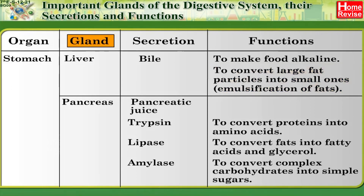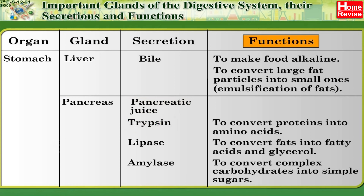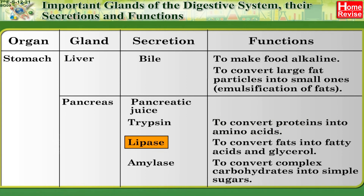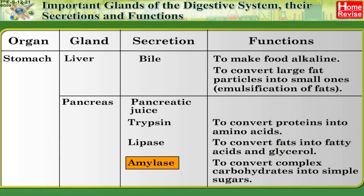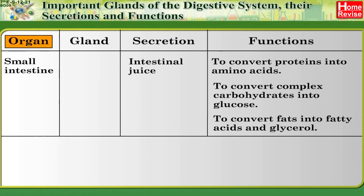Pancreas: secretion — pancreatic juice; enzymes include trypsin — function: to convert proteins into amino acids; lipase — function: to convert fats into fatty acids and glycerol; amylase — function: to convert complex carbohydrates into simple sugars.